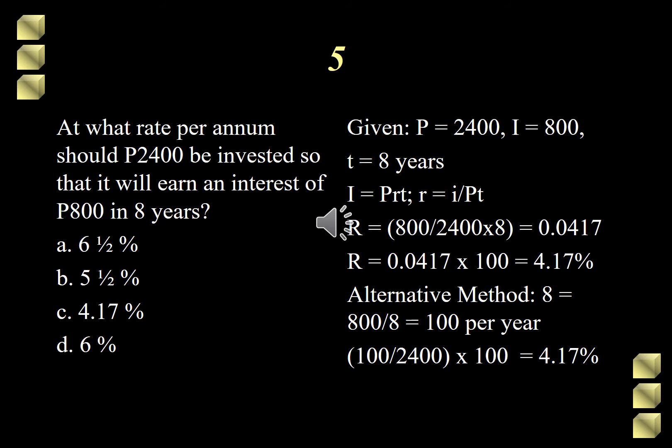Interest is the amount that the principal gains after being subjected to a certain interest rate. Using the properties of equality, I am able to derive the formula in finding the rate. R, therefore, is equal to I over principal and time, or I over PT.